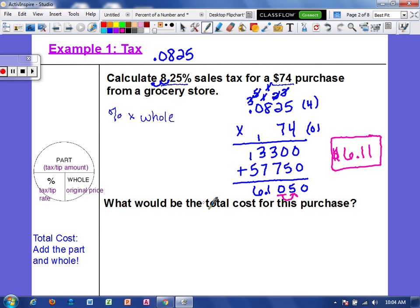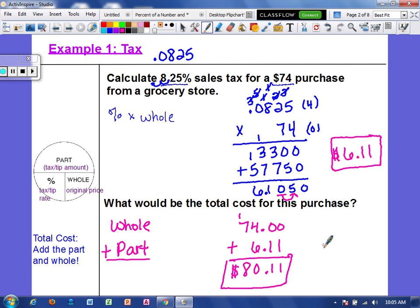So now, if we wanted to find the total cost for this purchase, we want to take the original price, which would be the whole, and then we want to add the part, because that would be the tax amount. So we're going to take the original price, which was $74, and now we're going to add that tax, which is $6.11. So with tax, the total cost at this grocery store would be $80.11.